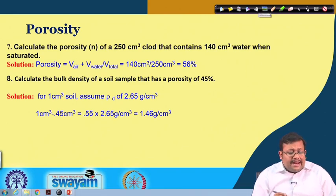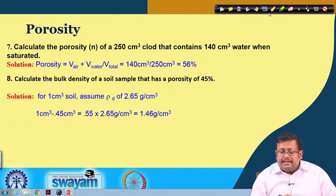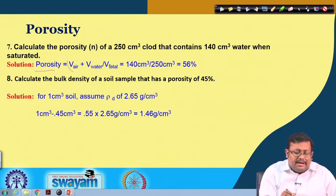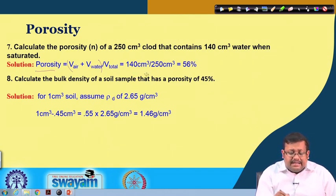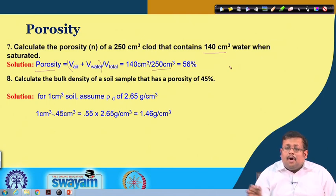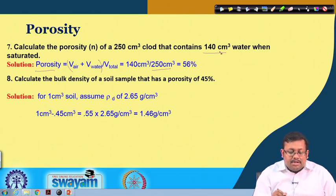Another question: calculate the porosity of a 250 cubic centimeter clod that contains 140 cubic centimeters of water when saturated. Porosity is expressed as volume of air plus volume of water over total volume. When saturated, all pore space is filled with water, so the pore volume is 140 cubic centimeters. Using this formula: 140 over 250 times 100 gives a porosity of 56 percent.